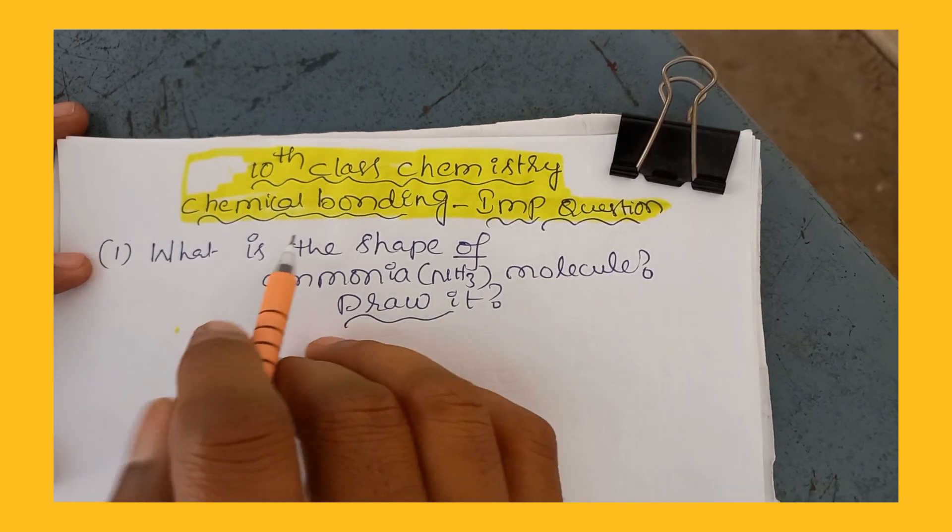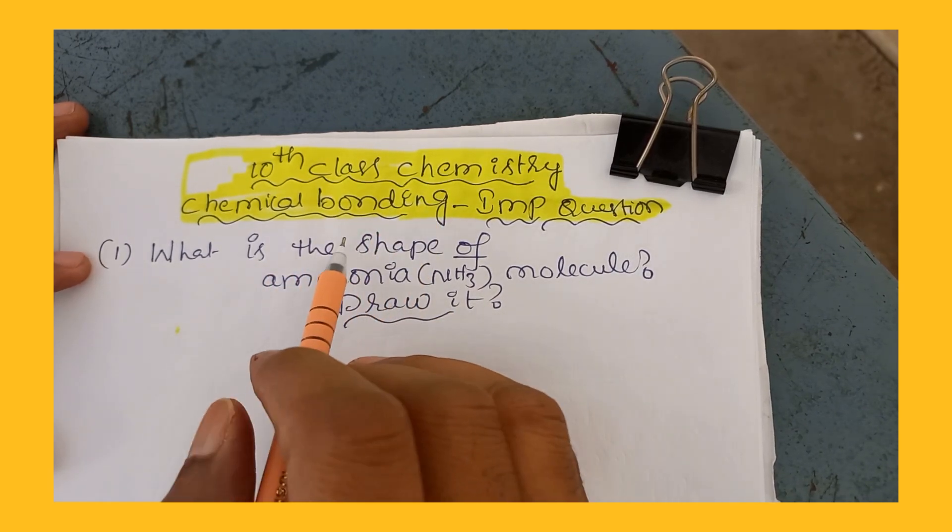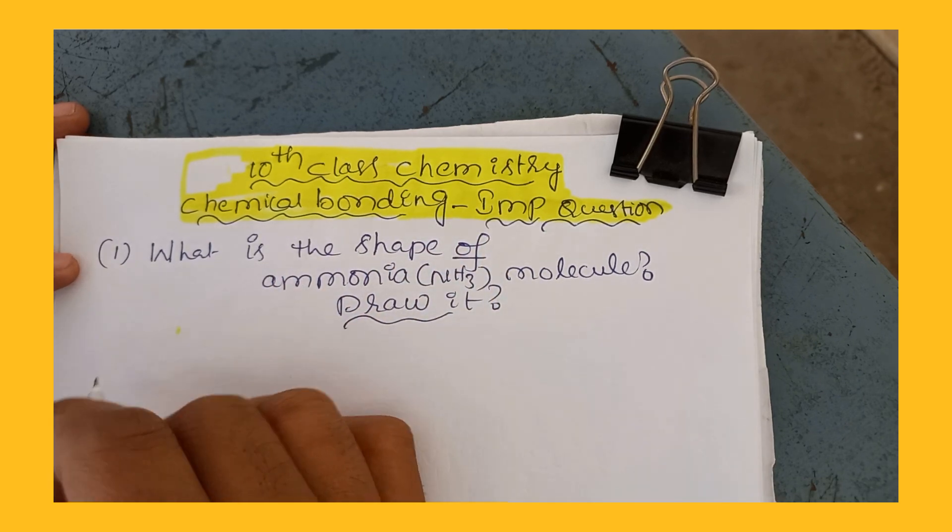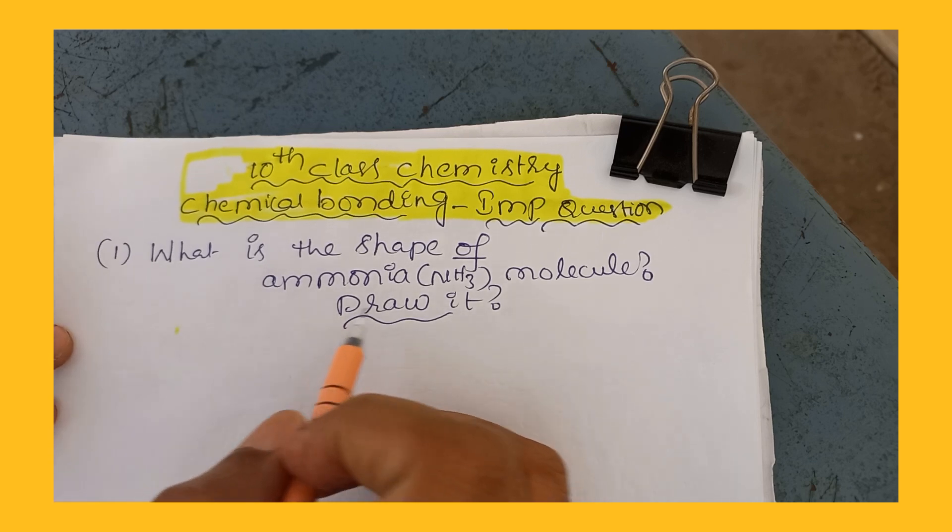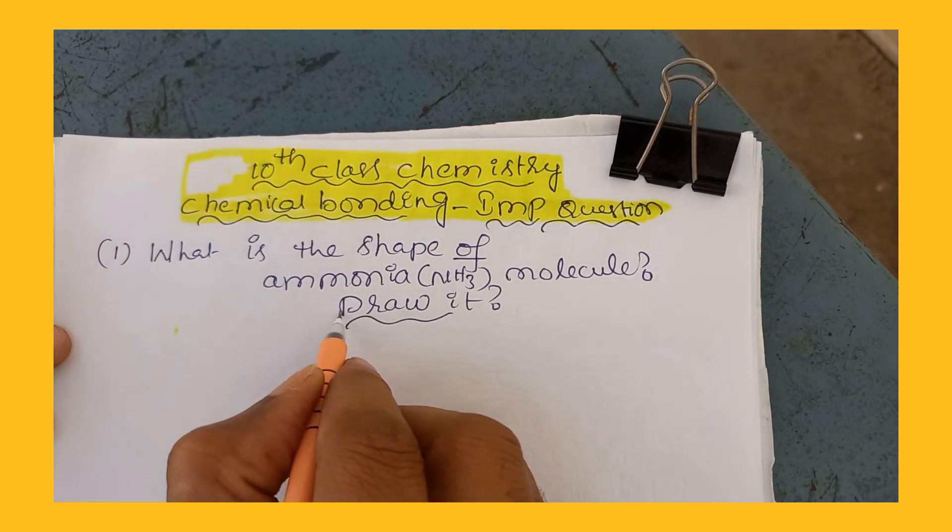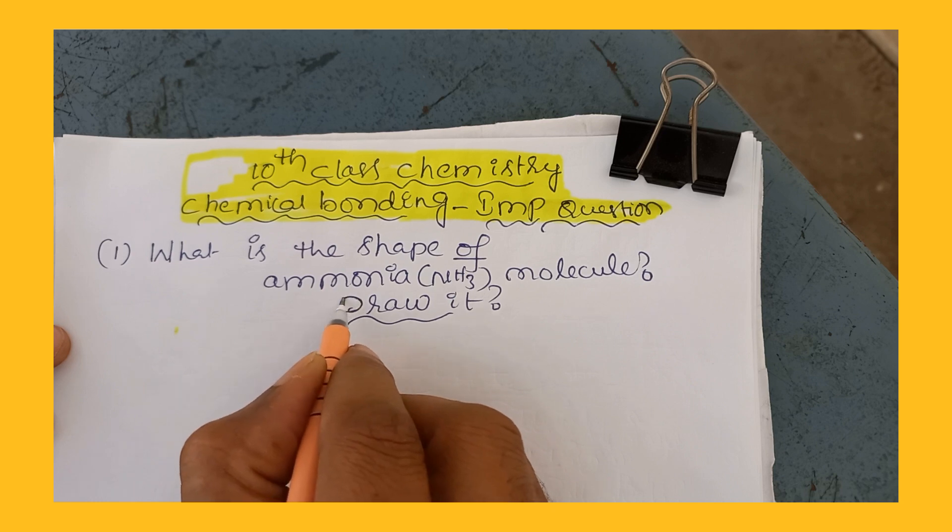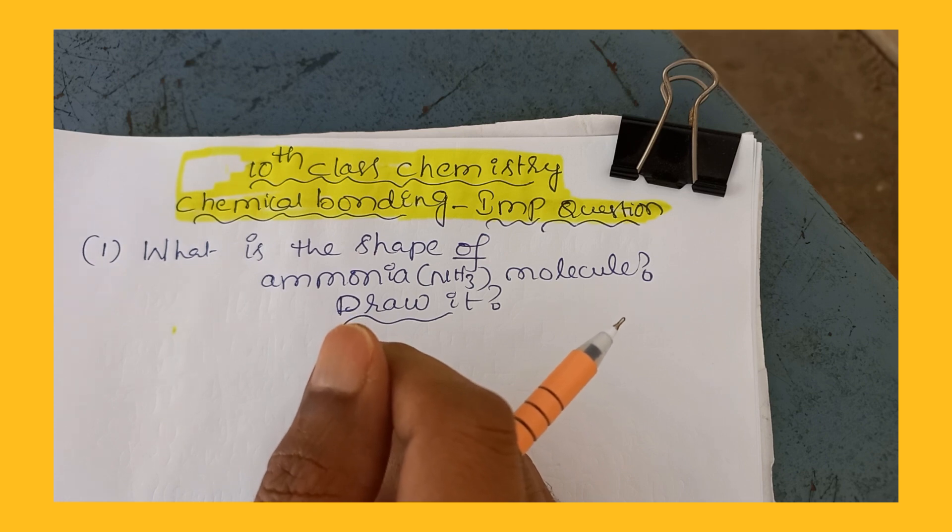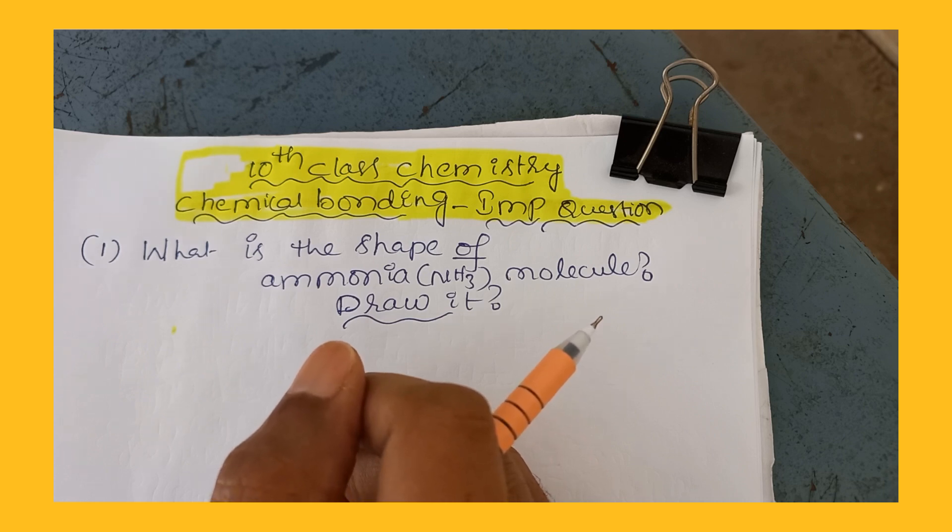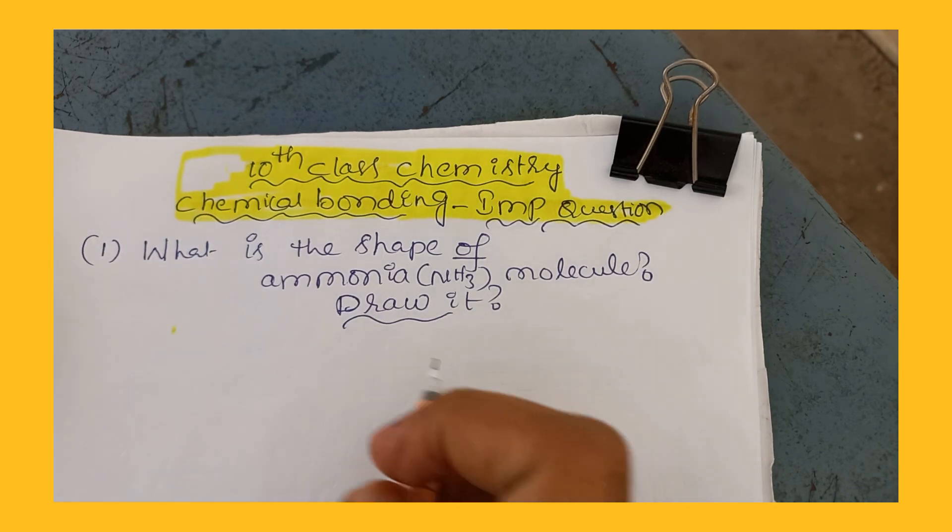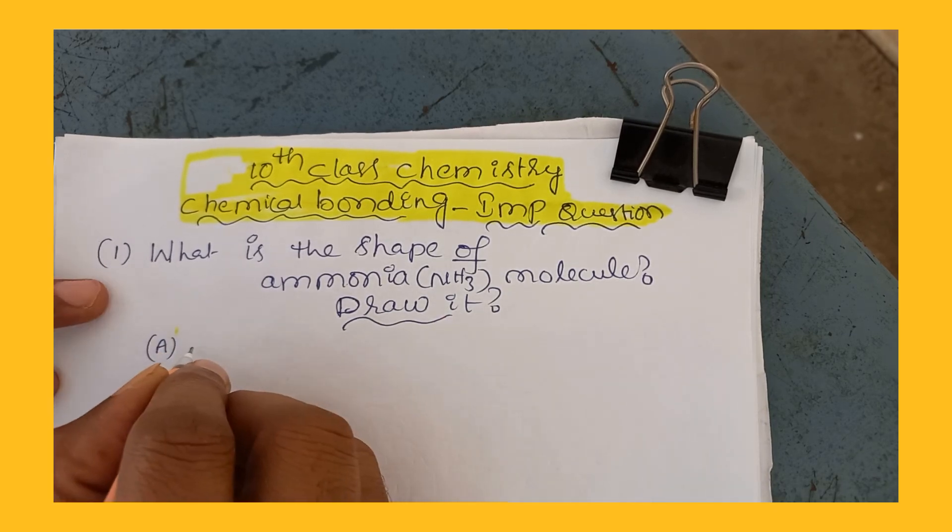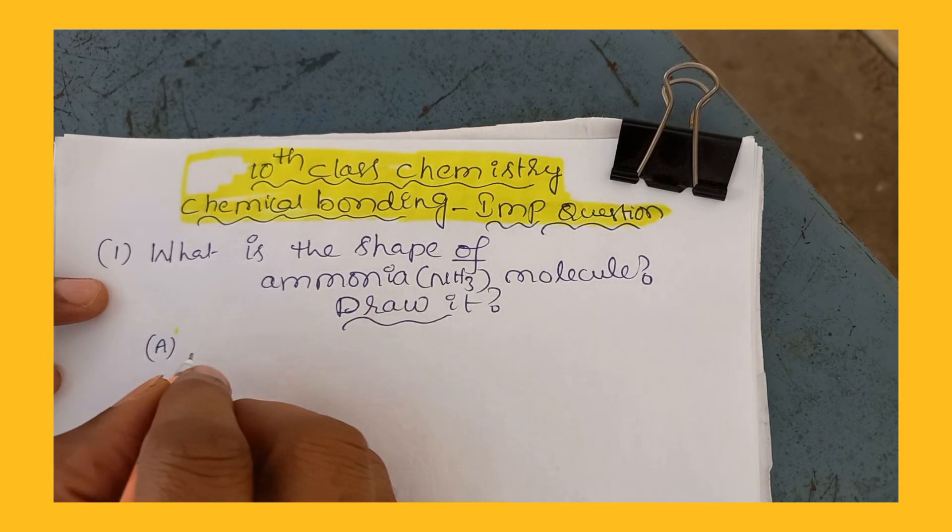So dear students, the 10th class chemistry under TS chemical bonding chapter, important question for two months for public examination: What is the shape of ammonia molecule? Draw it. So we have discussed beryllium chloride, boron trifluoride, methane molecules shapes and bond angles in the chemical bonding playlist. Now, what about ammonia molecule? Two mark important question. Ammonia molecular formula is NH3.